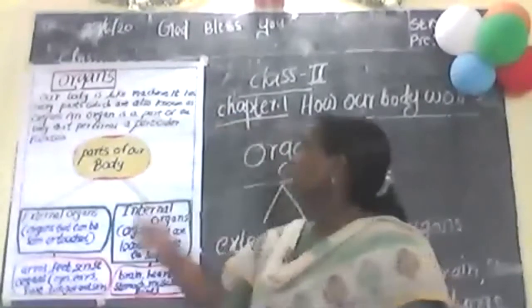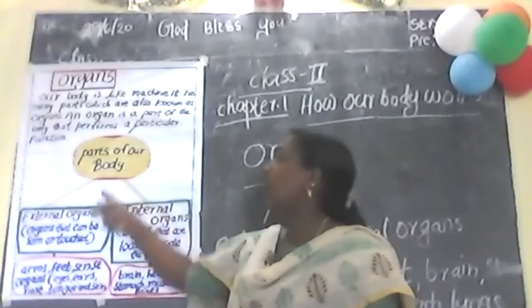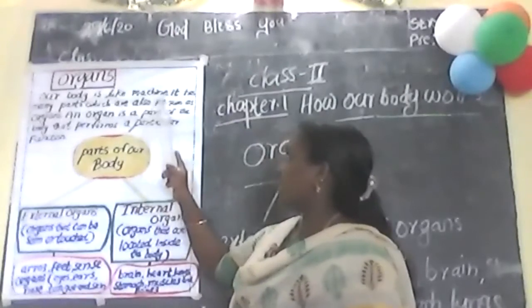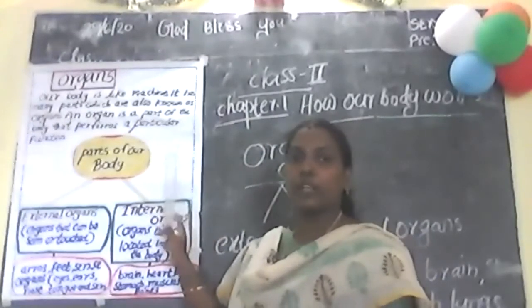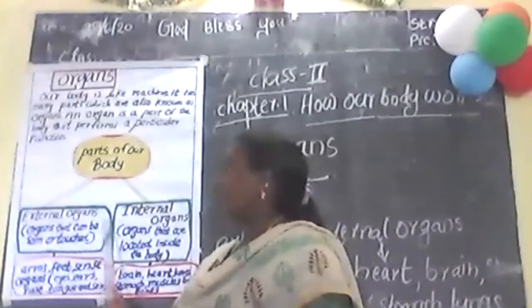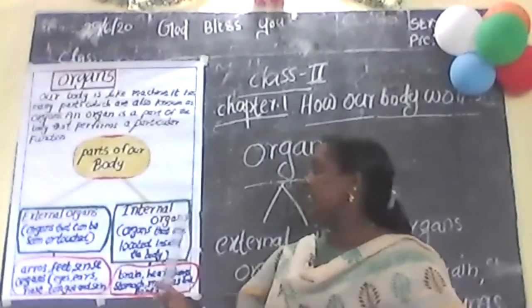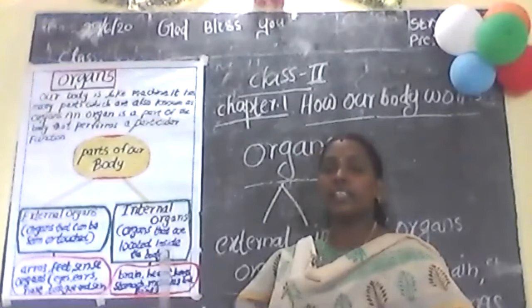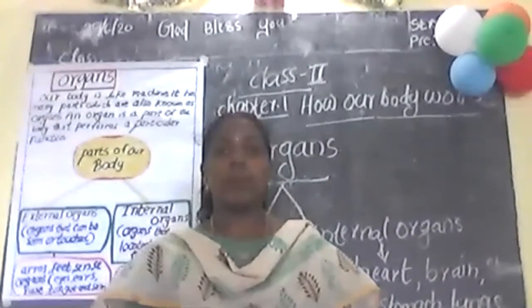Do you see the chart of organs and parts of our body? This chart is in your textbook. Parts of our body: our body is like a machine. It has many parts which are also known as organs. An organ is a part of the body that performs a particular function. Parts of our body can be divided into two: internal organs and external organs. Internal organs are organs located inside our body that cannot be touched or seen, but they help us in many ways.